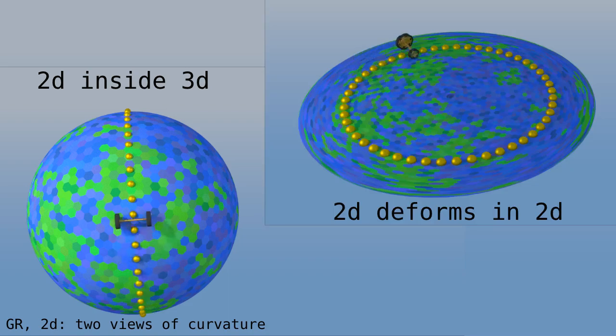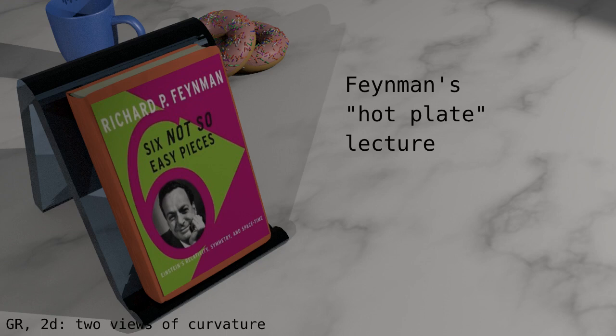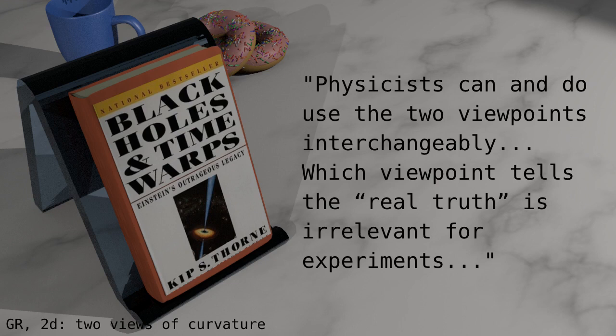So we have seen two ways of thinking about curved space. We can have a two-dimensional sphere embedded in a three-dimensional volume. Or we can get rid of the third dimension and deform the pixels, which are the substratum of space. Is one better than the other? Well, both are accepted viewpoints. Richard Feynman has a lecture on what he calls a hot plate, where the size of objects depend on temperature. His hot plate is the flat map that we have seen. I recommend checking out his lecture. Kip Thorne likes to use both. He writes, physicists can and do use the two viewpoints interchangeably. Which viewpoint tells the real truth is irrelevant for experiments. In this video series, I prefer the second viewpoint, where the pixels of a substratum bend and stretch. I find it much easier to visualize and get a gut feeling for what's going on, as we'll see later. It also fits nicely with quantum mechanics.